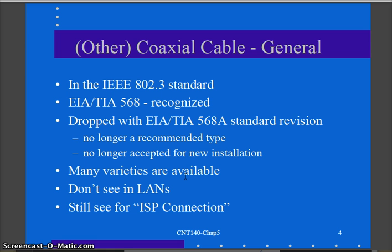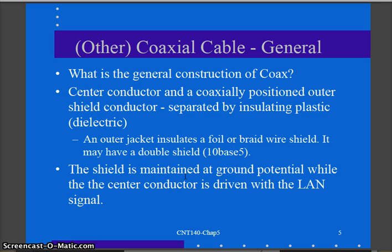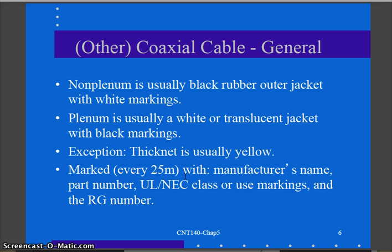We don't see coax in LANs, but we still see it as ISP connections for homes or businesses. The general construction includes a center conductor carrying the data, surrounded by insulating material, and then a shield around that. The shield, as the name implies, protects from EMI and RFI. Labels on the outside of the cable jacket from the manufacturer indicate size, gauge, and other specifications.